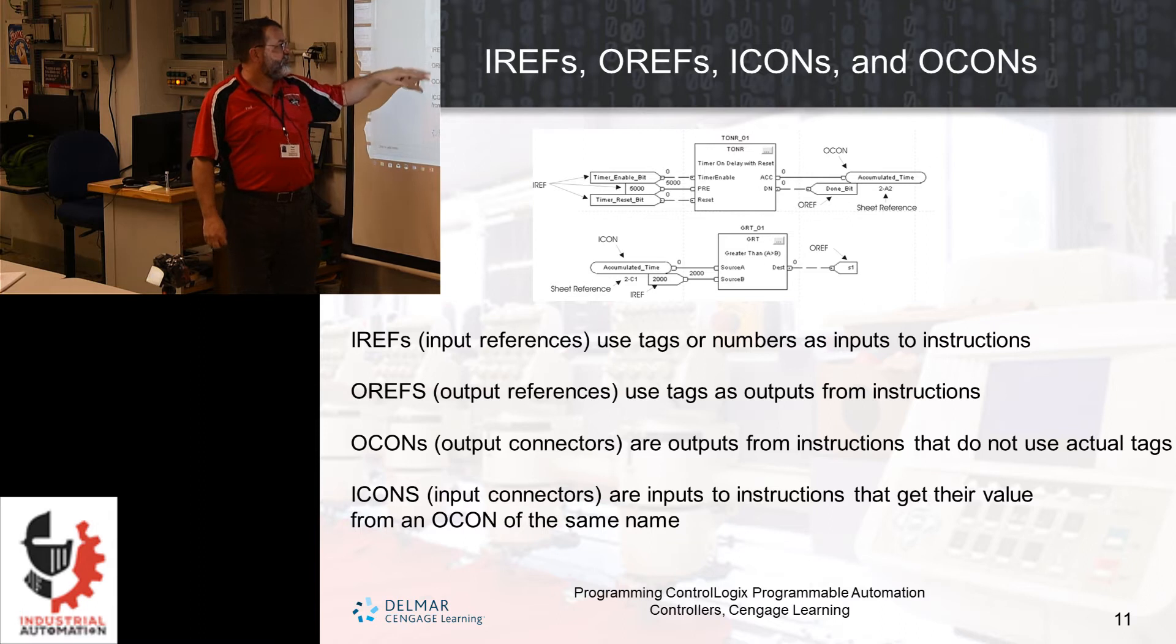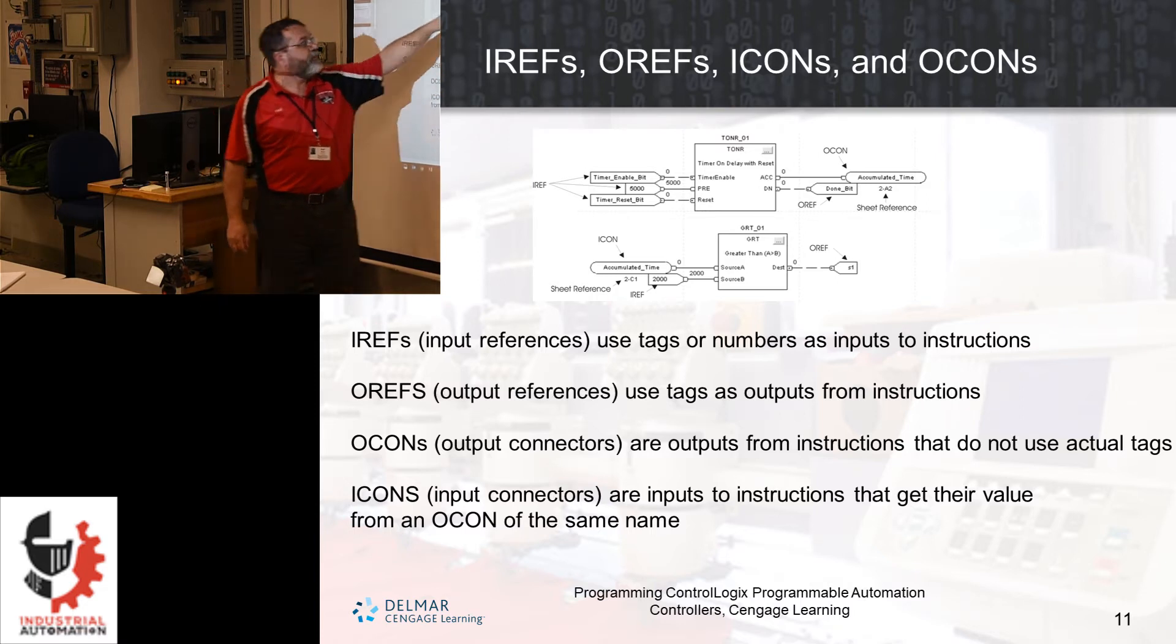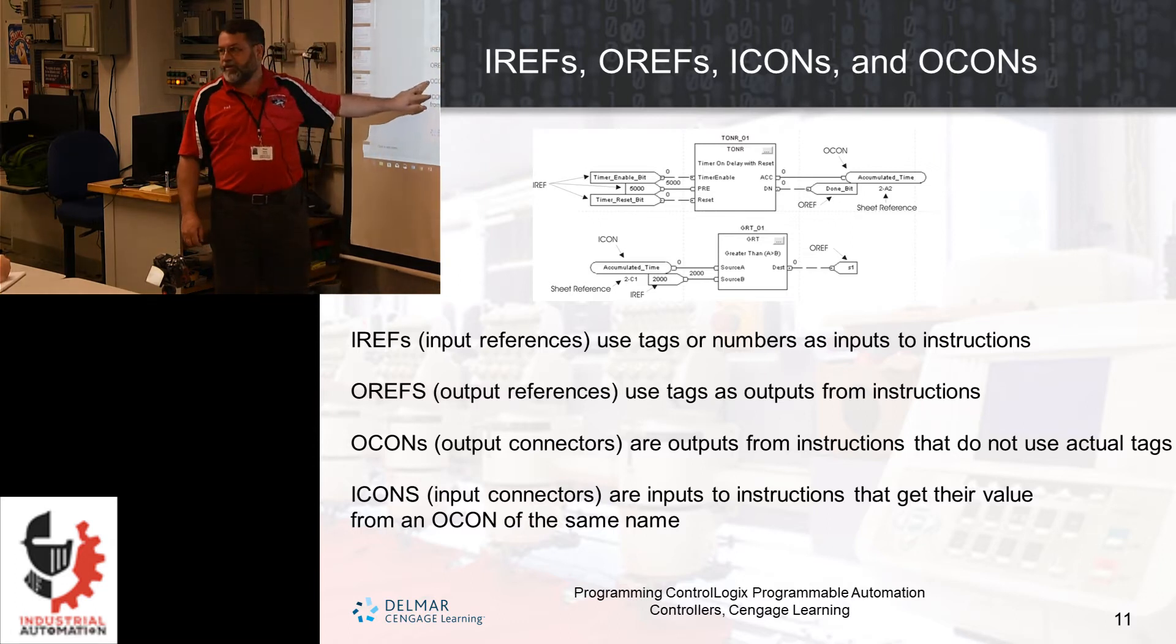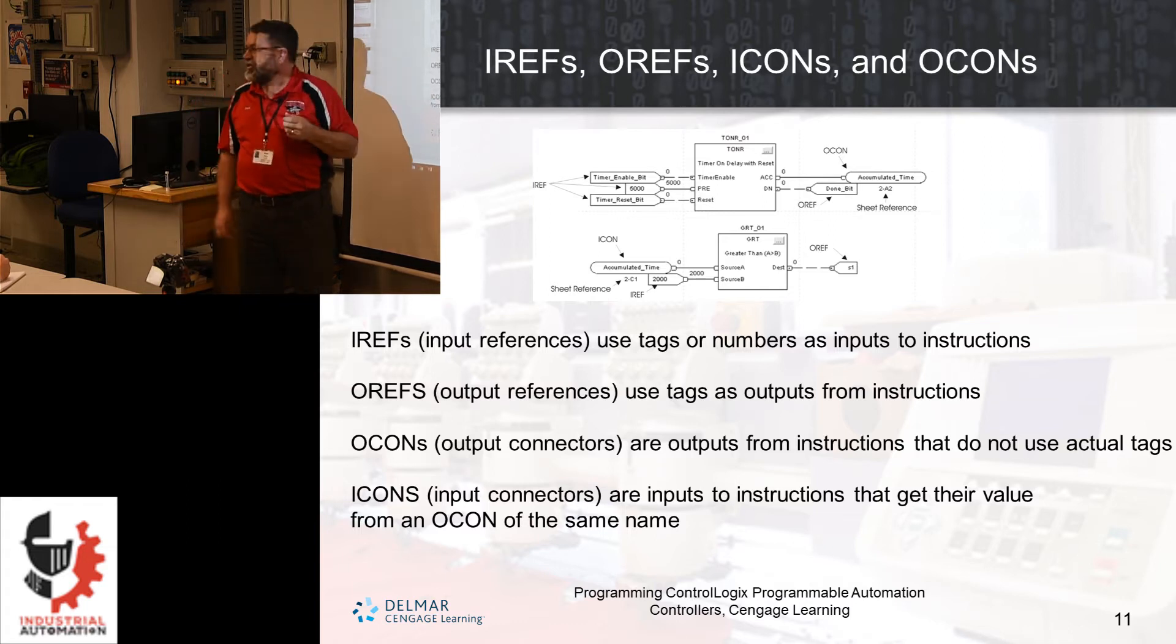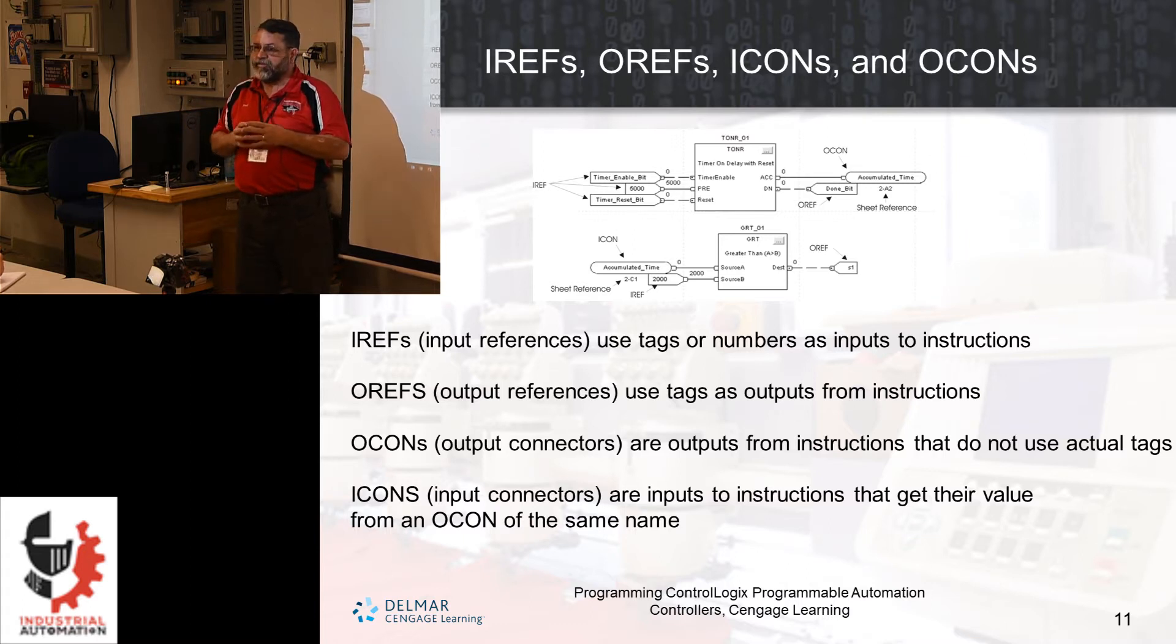So Allen Bradley called them iRefs and oRefs. Input references and output references. It's easier just to think of them as inputs and outputs. And they're the square sided ones. There's also these round guys which Allen Bradley calls those oCons and iCons. Output connectors and input connectors. The more common way to think about them are wire connectors. And what a wire connector does is it just connects two separate pieces of wire together. And we're doing that in a virtual way. They're not inputs and outputs. So there's no tags to make with them. They're just a convenient way to connect two points.